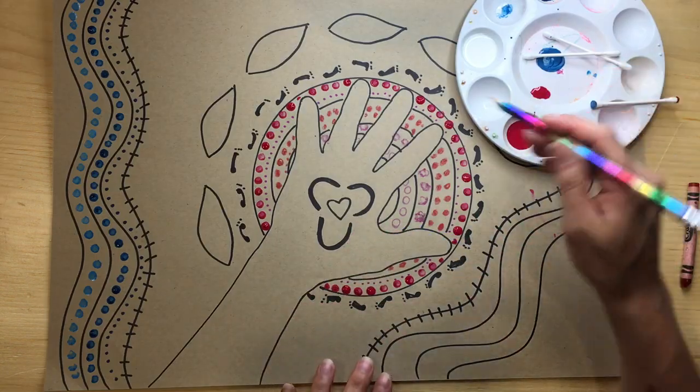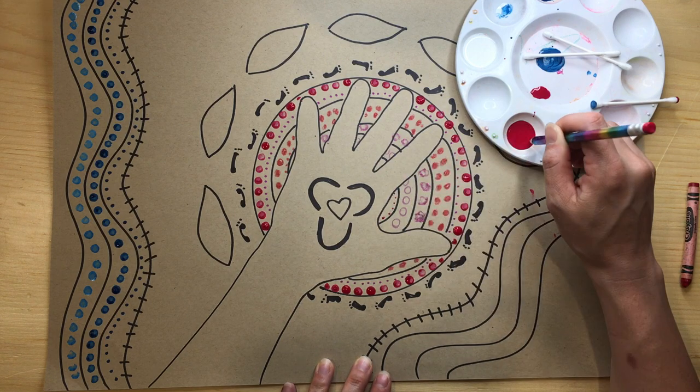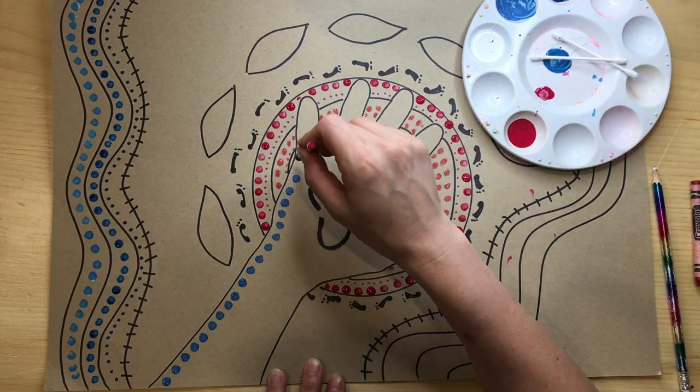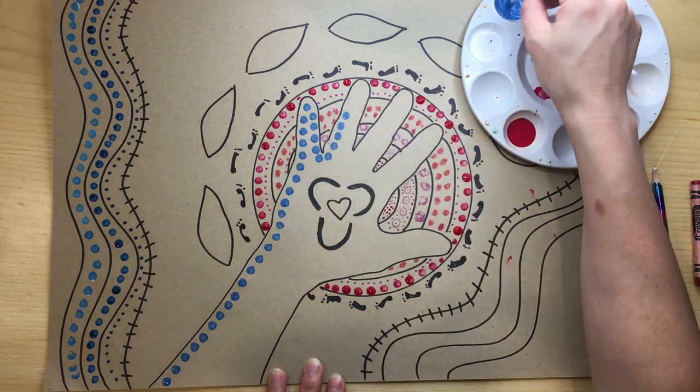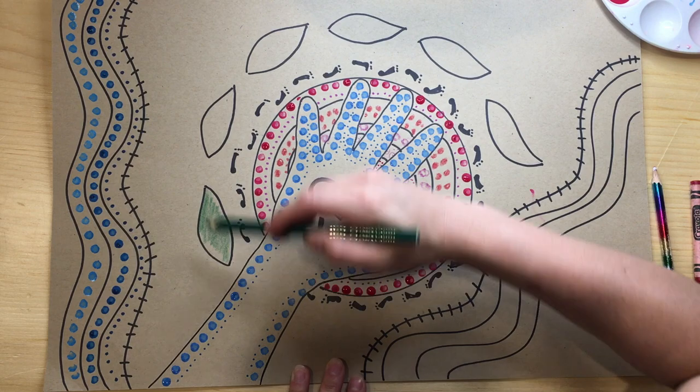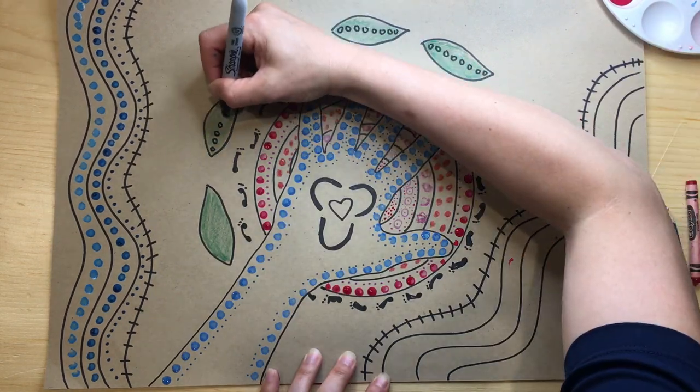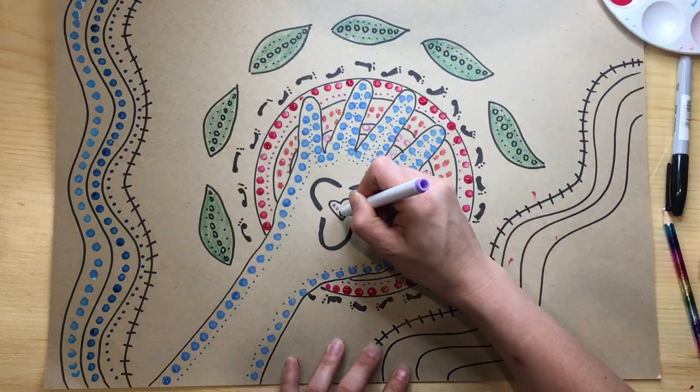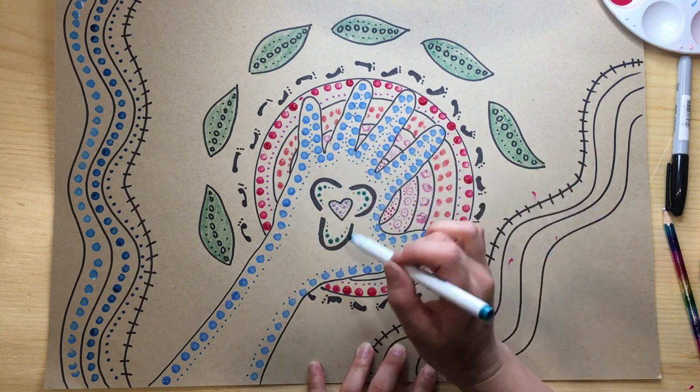Try using different sized dots within your painting. Your dots can follow the lines that you drew on your page to draw focus to your shapes. You can color some parts of your drawing in before you put dots over it if you want. Try to fill as much of your page with dots as possible.